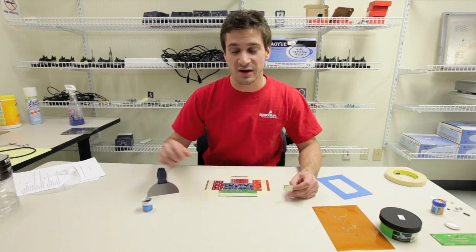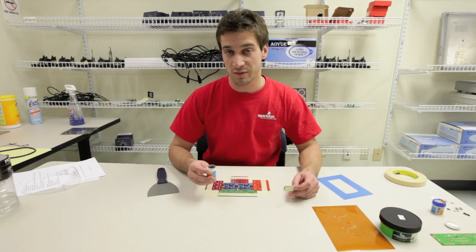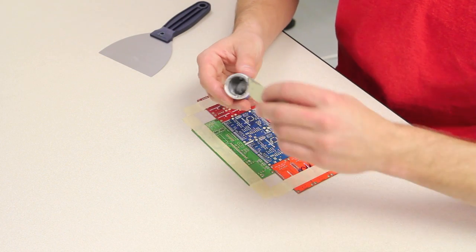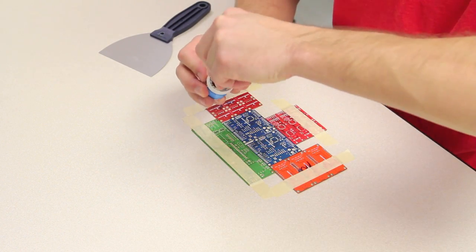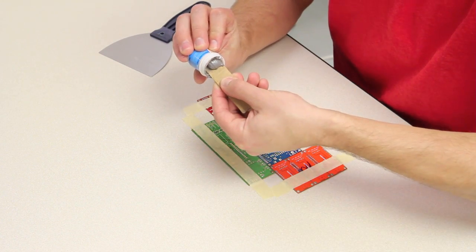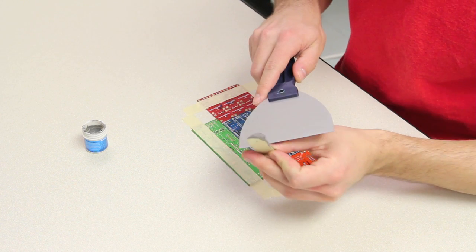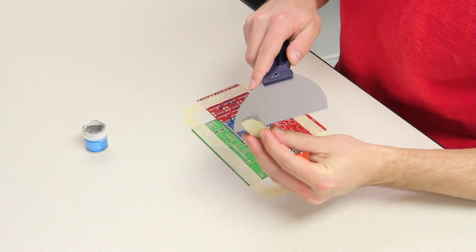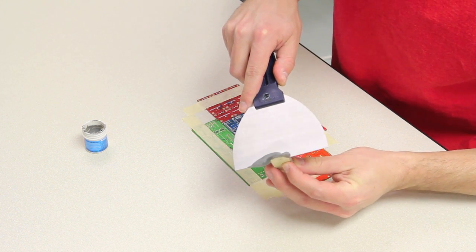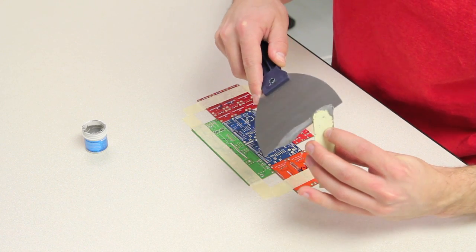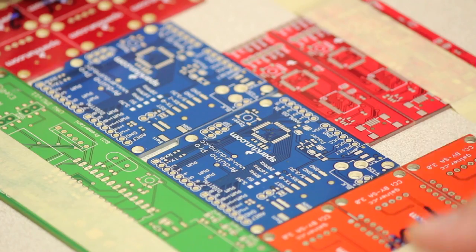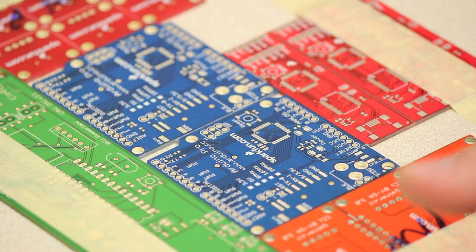So the next step is getting your putty knife ready for pasting. So what you want to do is take your solder paste, scoop out a good amount like that. And then you're going to want to apply a nice even layer across the putty knife.